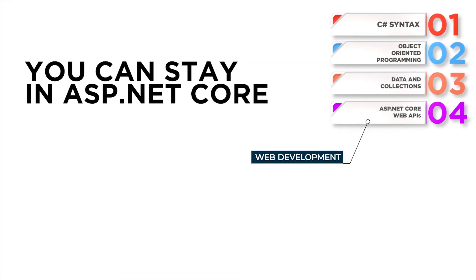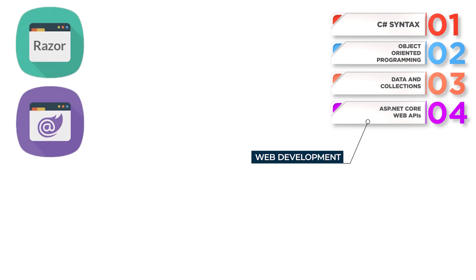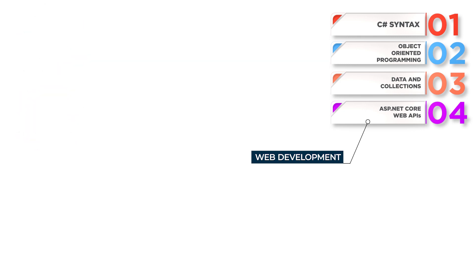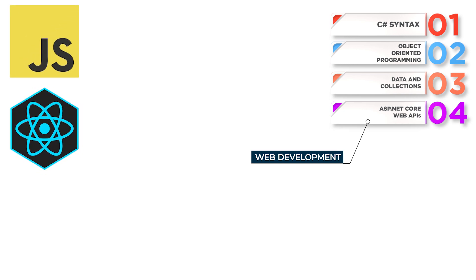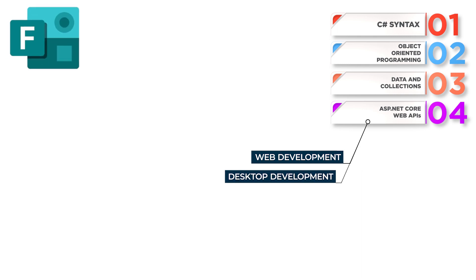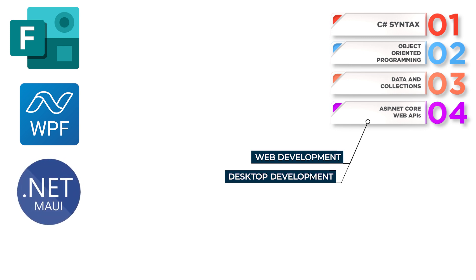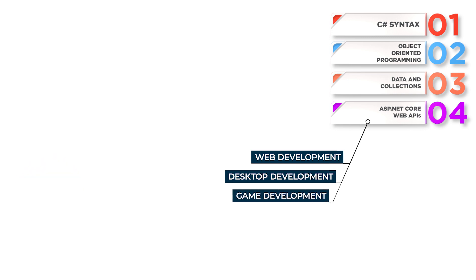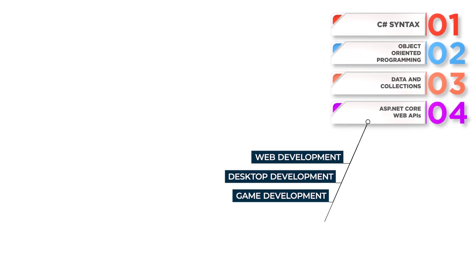Now that you've built that solid foundation, you're ready to make some choices. If you want to continue into full-stack web development, you can stay in ASP.NET Core and learn things like Razor or Blazor, or jump over and start learning JavaScript and add React to your repertoire. If you prefer desktop applications, you can learn Windows Forms, WPF, or .NET MAUI. Or if you want to go into game development, it's time to learn Unity. You may also decide you love back-end so much that you'd like to double down — in that case, start learning cloud and get certifications in things like Azure and AWS.